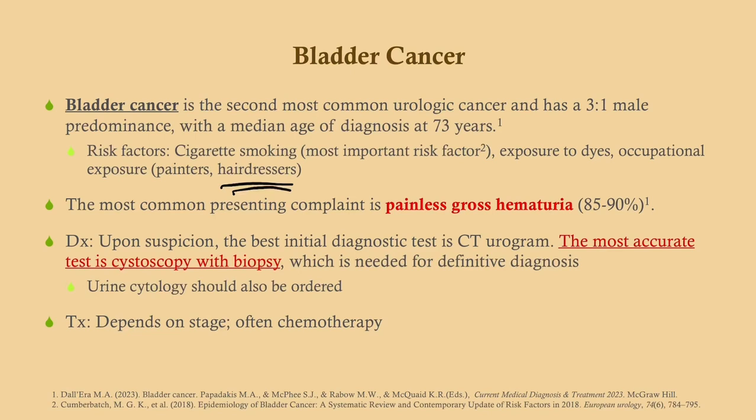The most common presenting complaint of bladder cancer is painless gross hematuria — nearly 90% of patients present this way. Patients will urinate orange or red and seek care promptly, giving a clear clinical picture. The best initial diagnostic test is a CT urogram to visualize the tumor. However, cystoscopy is the most accurate and necessary test because you need to biopsy the lesion for staging, which dictates treatment — often chemotherapy but not always.